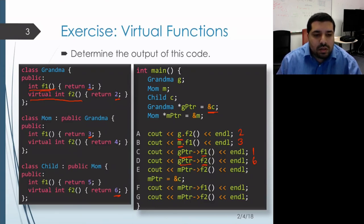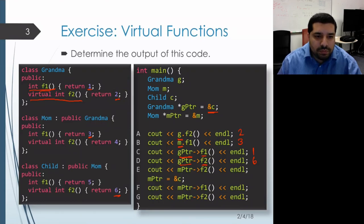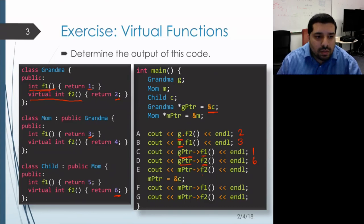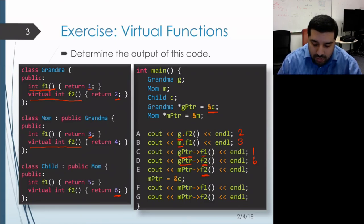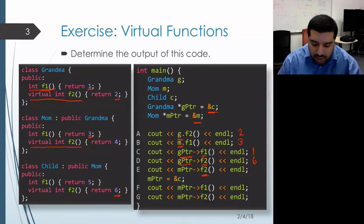On the next line, we have a pointer here as well. The first thing we need to figure out is what's the static type of the receiver — the static type is mom. Then we're looking for an F2 function within the mom class, and we find it. We see that it's actually marked as virtual, so we're going to get dynamic binding. Now we need to figure out what's the dynamic type of the object. m pointer was actually initialized to be pointing at a mom object, so this dynamic type also happens to be mom. Therefore, we'll get the F2 function within the mom class, and that returns the value four.